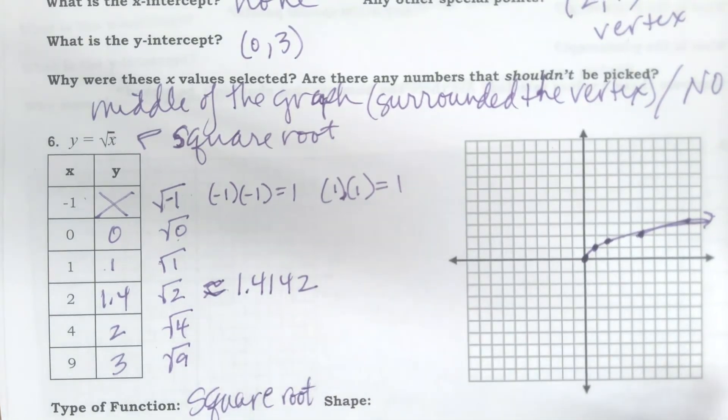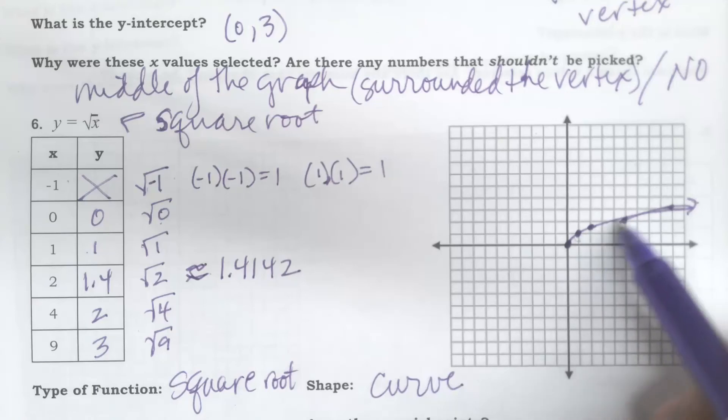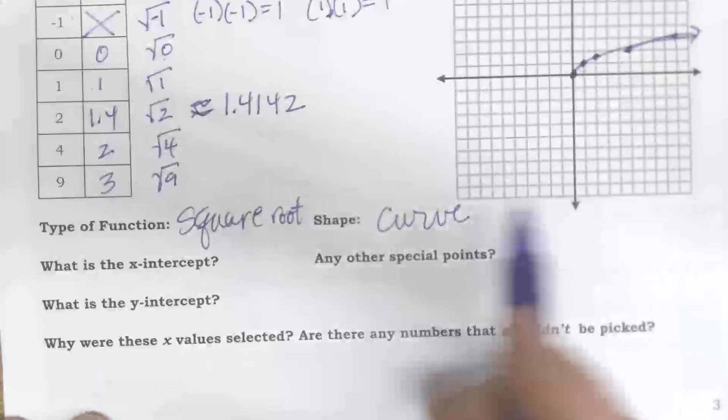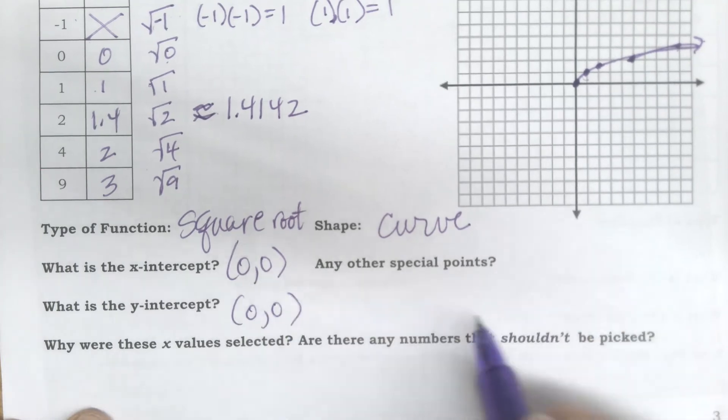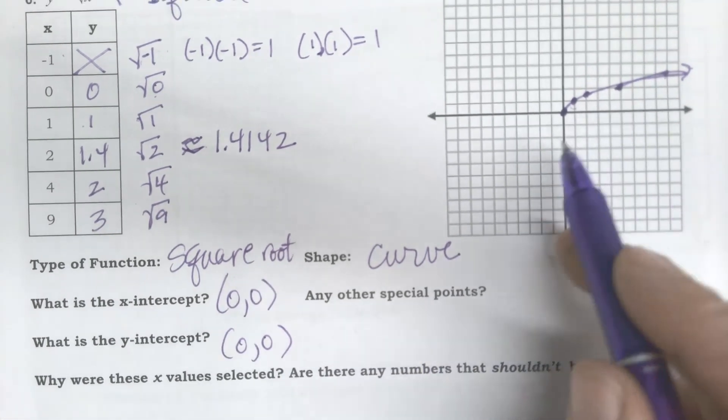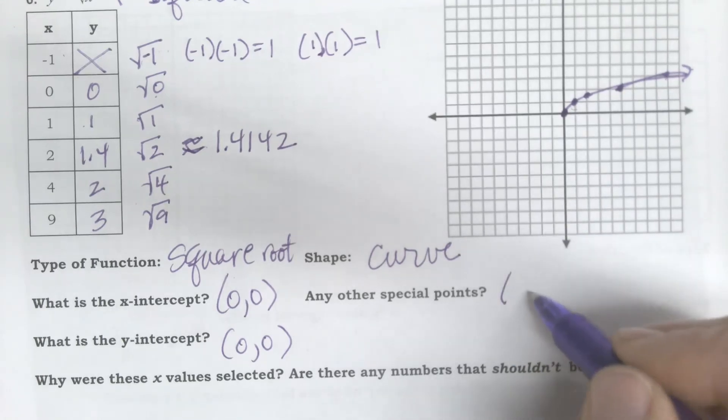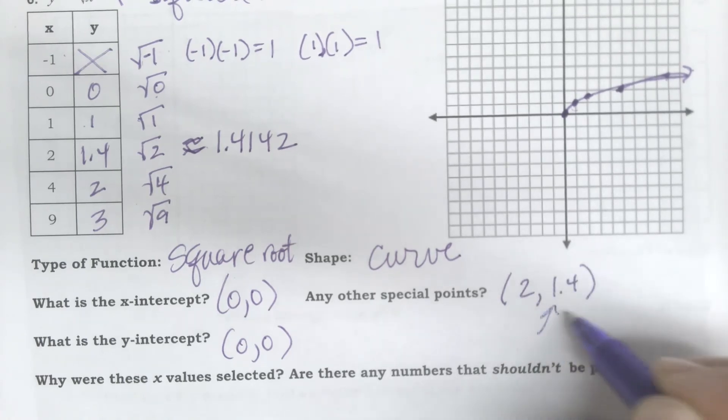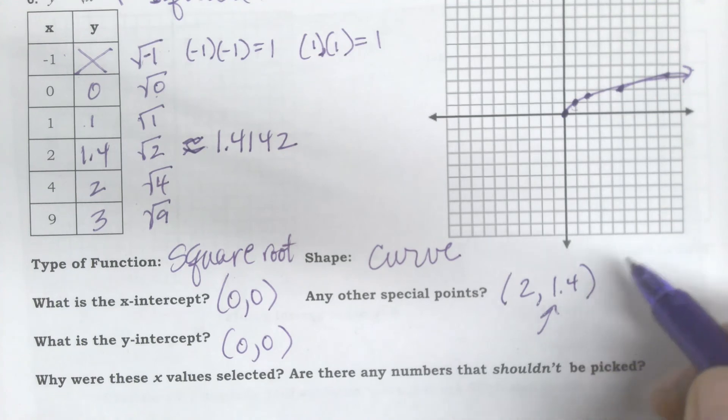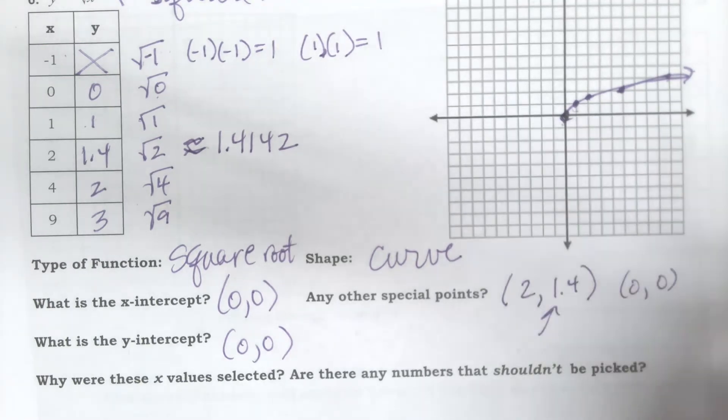What's the shape? I don't even know, it's a curve. They said it was a half of a rainbow this morning, kind of. I guess I can see that. I'll just call it a curve. What's the x-intercept? Crossed at 0, 0. What's the y-intercept? Also at 0, 0. What's another important point on there? Somebody said earlier that it was this 2 comma 1.4-ish point. That's kind of special because it's not normal.